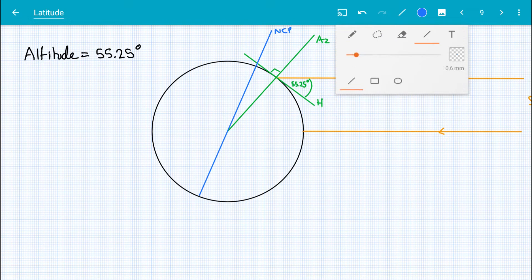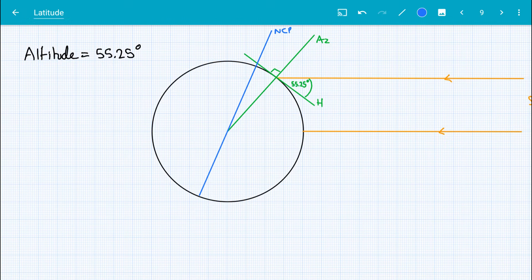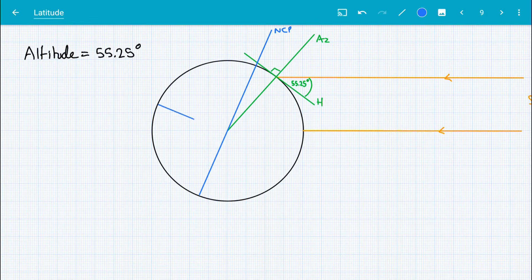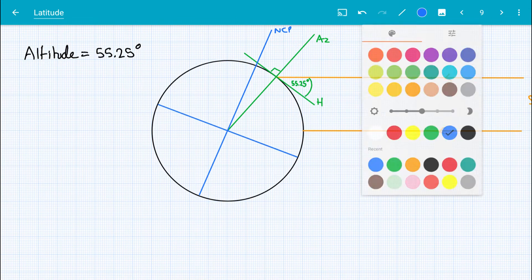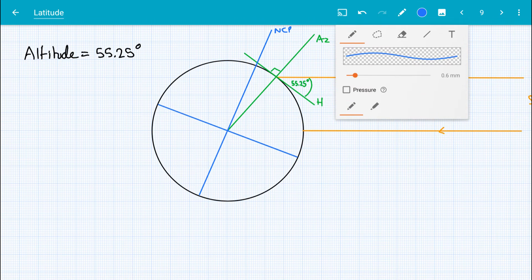And we've got the celestial equator as well, which should be perpendicular. Yeah, not bad. So that is the celestial equator. I'll label that EQ.